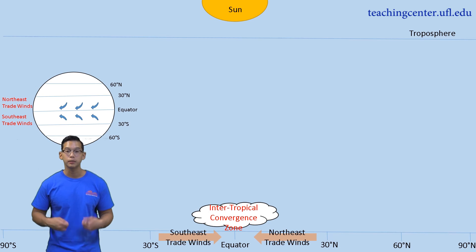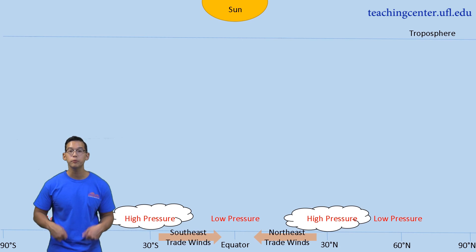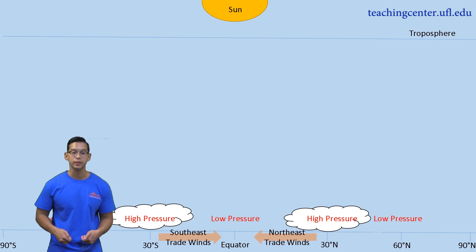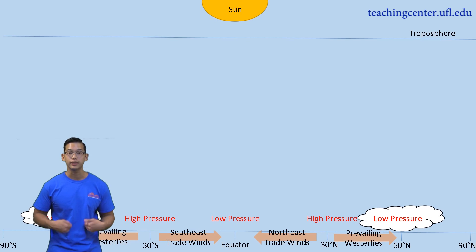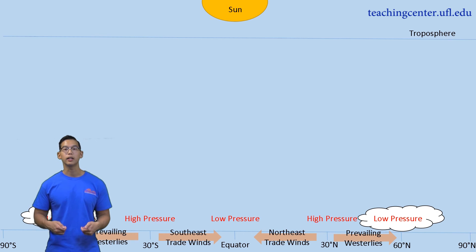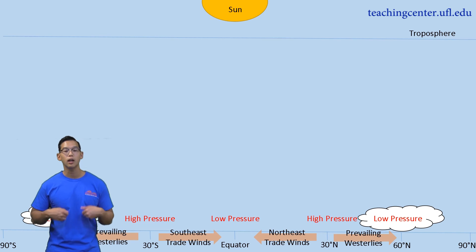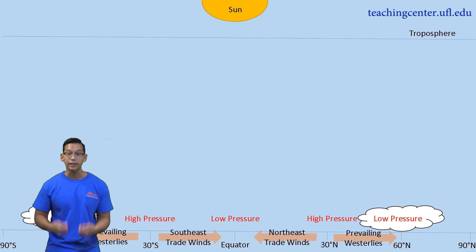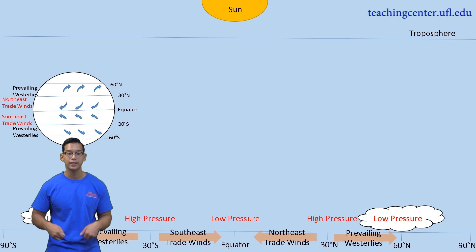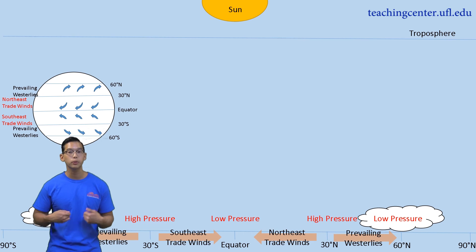Ferrel cells are created in a similar manner. In addition to air molecules moving from 30 degrees latitude to the equator, they can also move from 30 degrees latitude to 60 degrees latitude. This is a result of air rising at 60 degrees latitude, creating an area of low pressure. Air likes to move from an area of high pressure to an area of low pressure — in this case, from 30 degrees latitude to 60 degrees latitude. This air movement creates our prevailing westerlies. If we viewed these winds from a global perspective, they would move from west to east, since these winds are moving away from the equator and towards the poles.